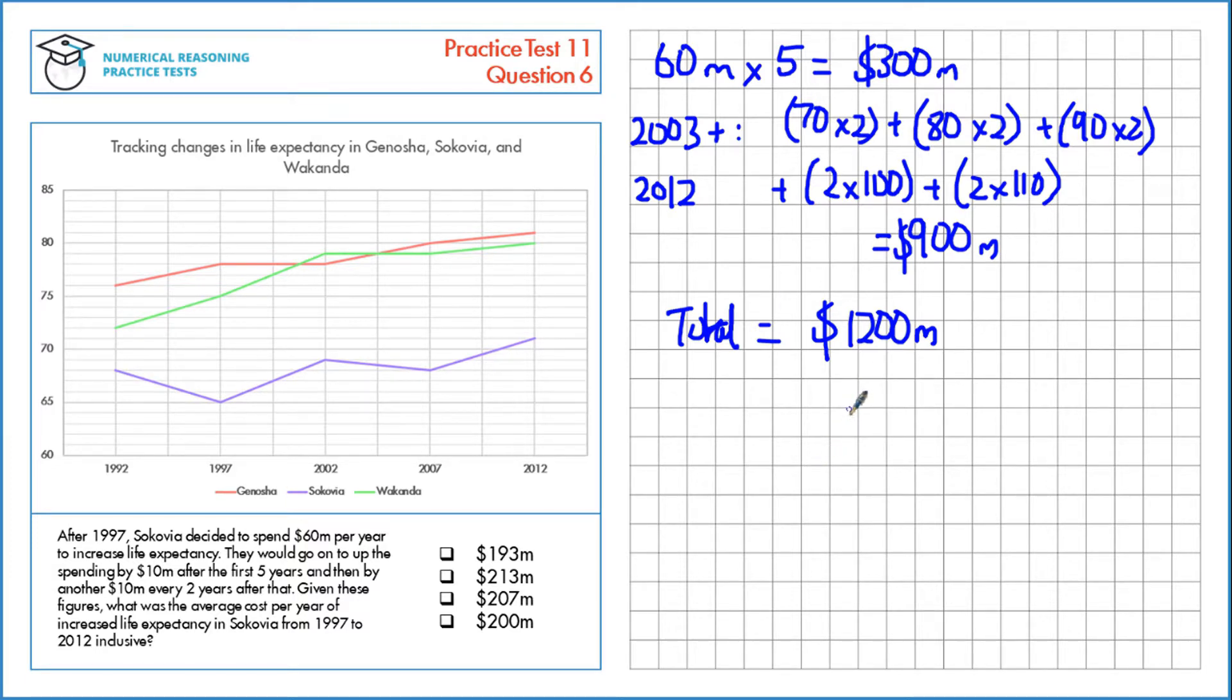Now we need to find the average cost per year of increased life expectancy. We are looking at Sokovia here, and in 1997 the life expectancy was 65, and that's increased up to 71. So 71 minus 65, we've had an increase of 6 years.